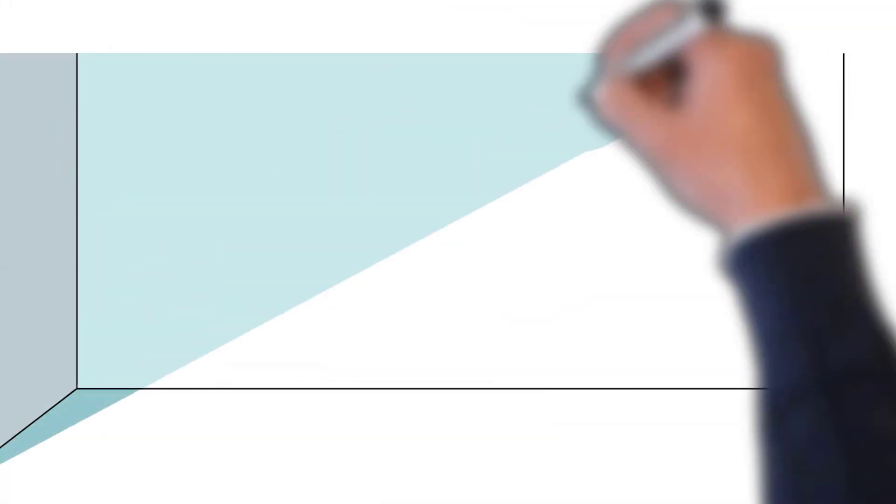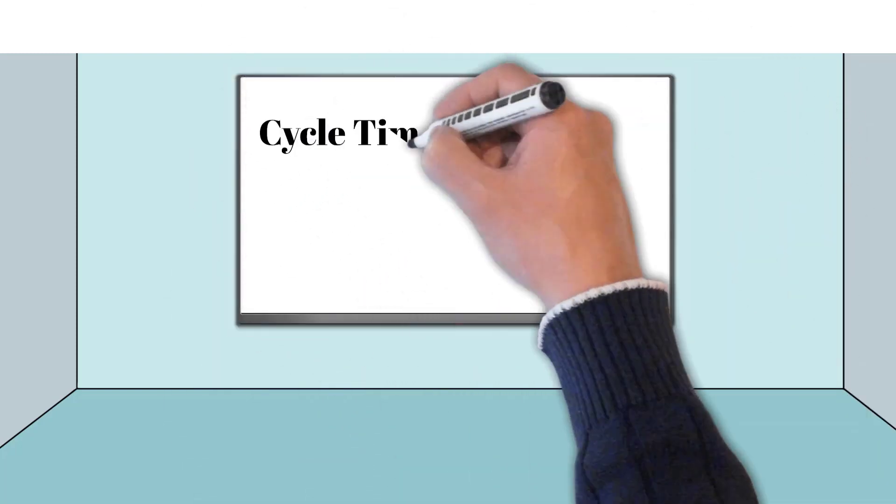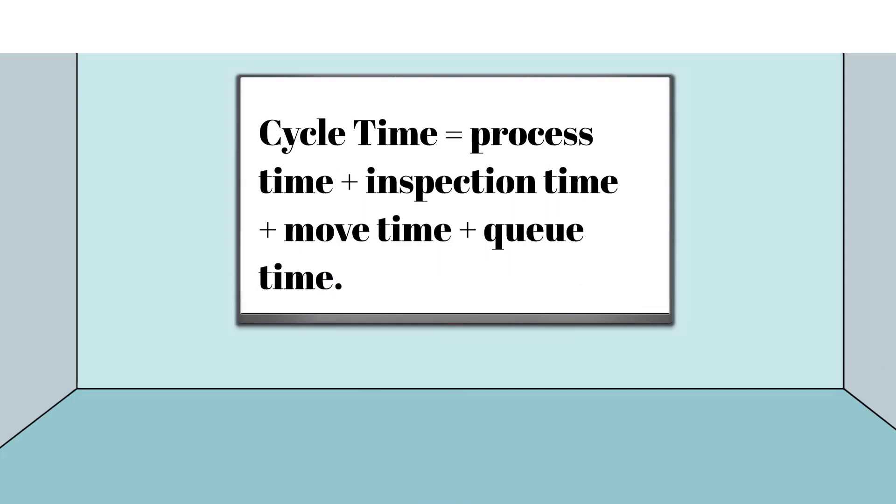To calculate cycle time, we just add up all these times: process time plus inspection time plus move time plus queue time. It's like putting together pieces of a puzzle to see the whole picture.